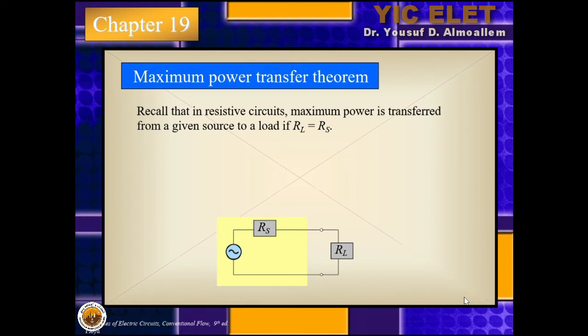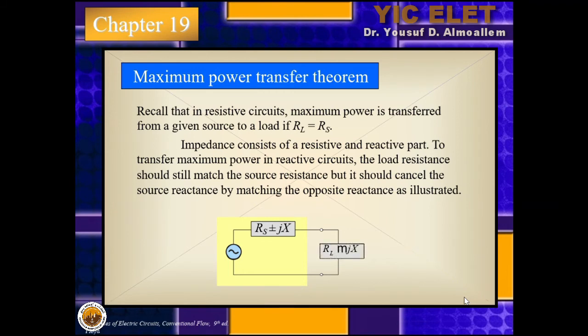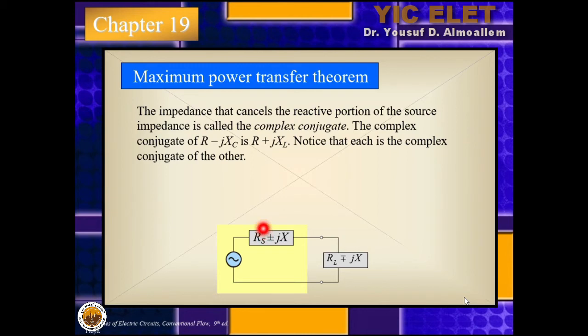Once we have that impedance, the maximum power is transferred to the load if the real part is the same—RS equals RL—but the imaginary part is exactly the opposite. If this was positive, this will become negative. In that case, the imaginary part will be cancelled and only RS will be exactly the same.